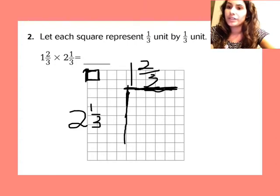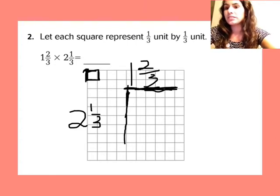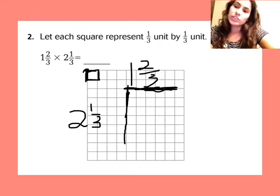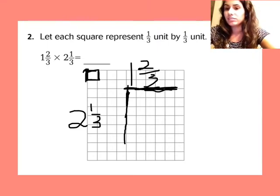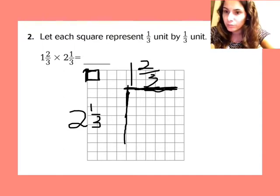Now I have two wholes because I have six-thirds right now. I have six boxes, so I have six-thirds—that's two. Now I need one more third.